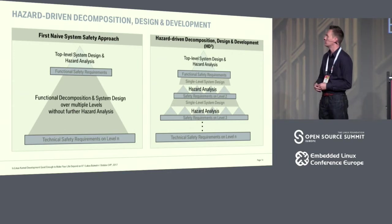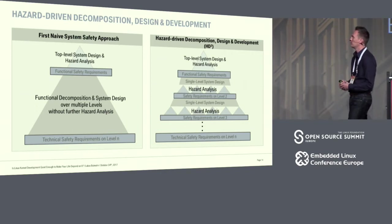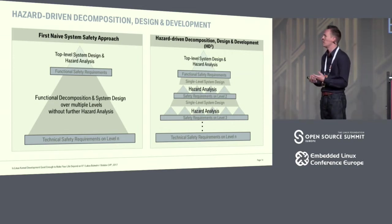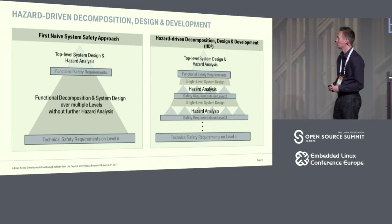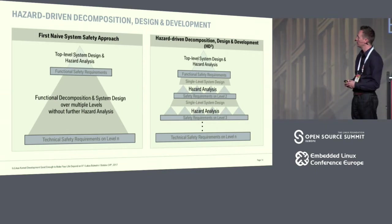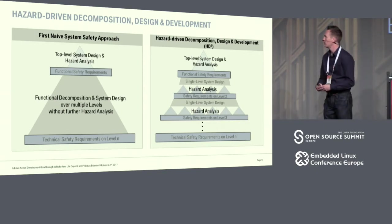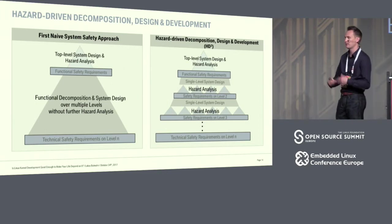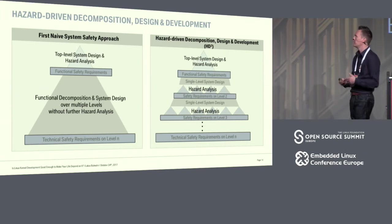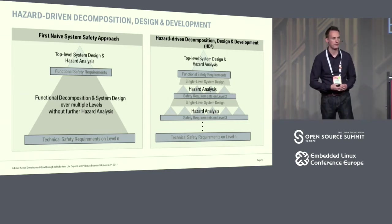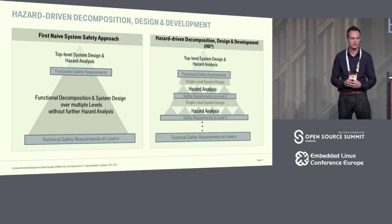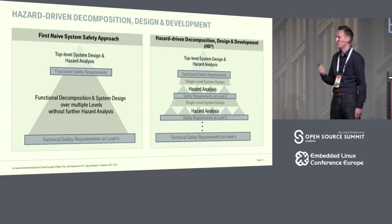In our naive approach, we started with a top-level system design, did a hazard analysis, came to functional safety requirements, and did a functional decomposition down to technical safety requirements at the OS level — but at that point the requirements were far too unclear in how they related to the top-level hazards. Instead, we restarted: we repeated the top-level system design and hazard analysis, then unrolled the system design by one level and restarted the hazard analysis to get refined safety requirements at the next level. We repeat this process, unrolling the design level by level until we have precise requirements on the operating system. If you want to know more about this approach, we had a three-day workshop last year and will probably have another one next year.